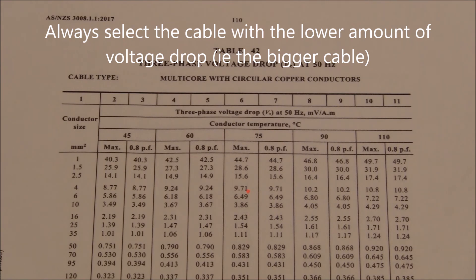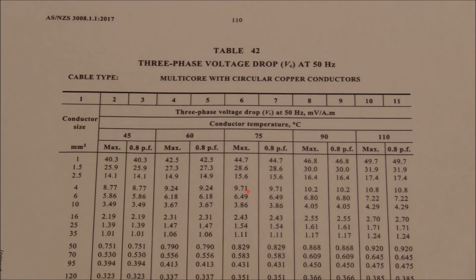Larger cables have lower voltage drop values. A 630 millimetre squared cable would be brilliant to minimise voltage drop, but you cannot fit it in the light switch terminals.